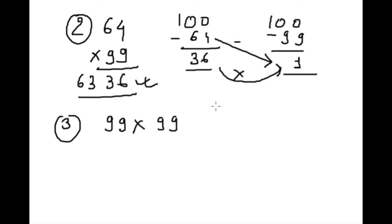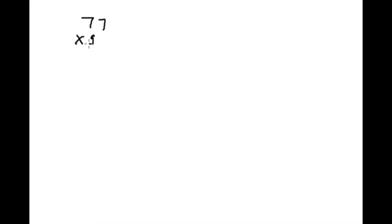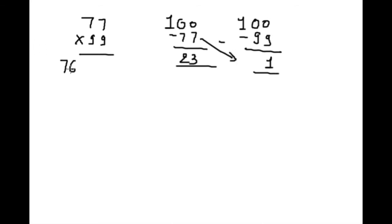Subtract from 100, we will get 1 on both sides. Here also, again subtract 98, multiply 1. Here is the answer. Let's see more examples: 77 into 99. 100 minus 77, 100 minus 99, equals 1. Subtract 76 and multiply 23. Here is the answer.